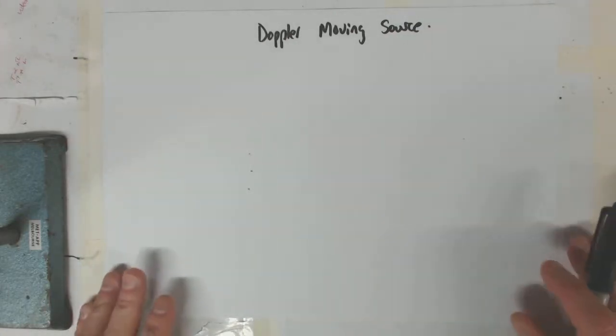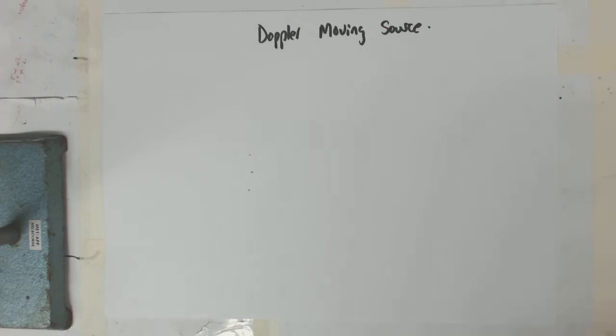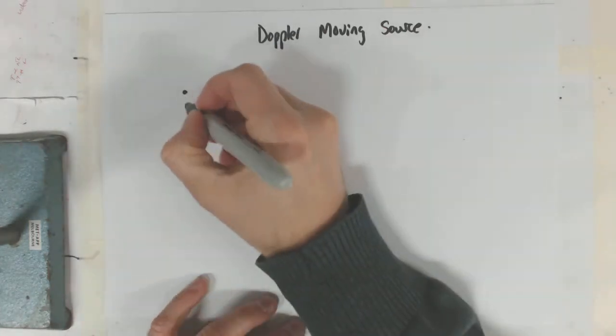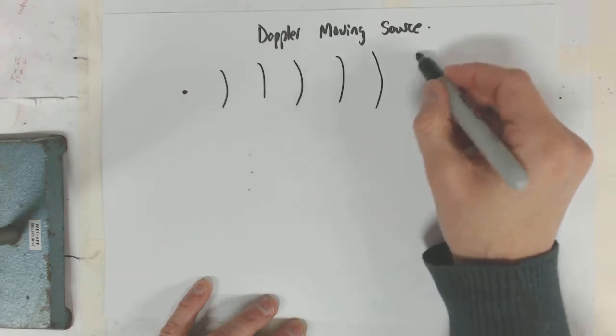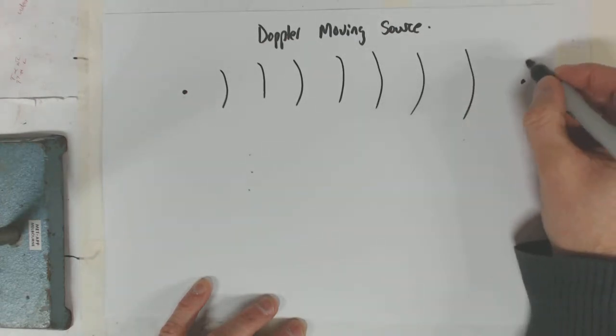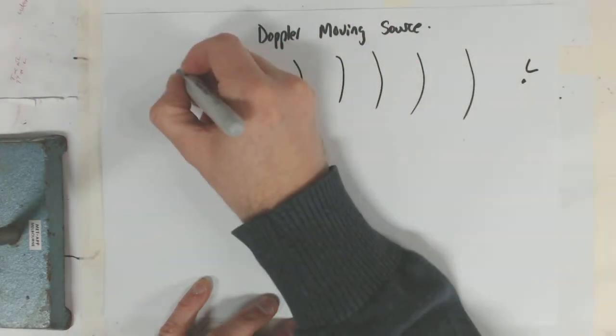All right, what we're going to look at here is a Doppler moving source and try to derive the equation for it. We've got a source over here that puts out waves, got a listener over here. We'll call the listener L.